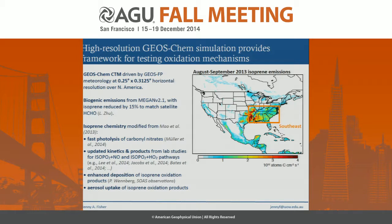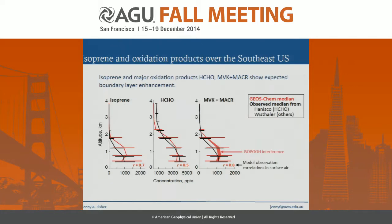The isoprene emissions from the whole SEAC4RS period are shown in the plot on the right. The outer box shows the entire North American domain, the inner orange box is the southeast region, and all aggregate statistics I'll show are over that southeast region. We can test how well we're doing for isoprene emissions by looking at isoprene and the standard oxidation products formaldehyde and MVK/methacrolein. The median vertical profiles show we do a pretty good job at surface concentrations, and the correlation between observations and model is quite high, reflecting good representation of spatial variability.